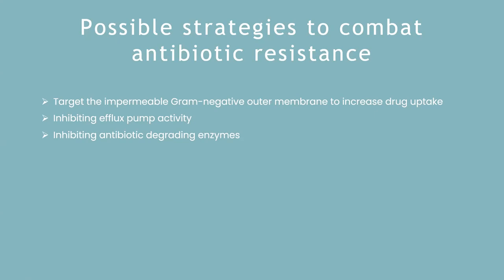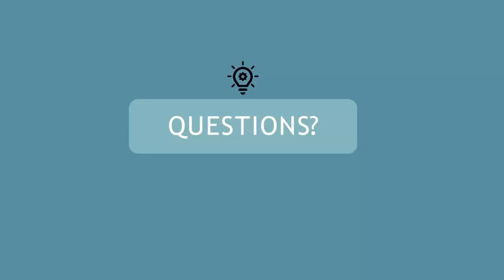These are some strategies to combat antibiotic resistance. We can target the gram negative outer membrane to make it more permeable and increase drug uptake - this isn't really a problem with gram positive bacteria as they penetrate the peptidoglycan more easily. You can also inhibit efflux pump activity so drugs remain in the bacteria longer. Additionally, inhibiting antibiotic-degrading enzymes such as beta-lactamases - there are drugs that inhibit beta-lactamases in bacteria, though even some of these bacteria are becoming resistant to those drugs.